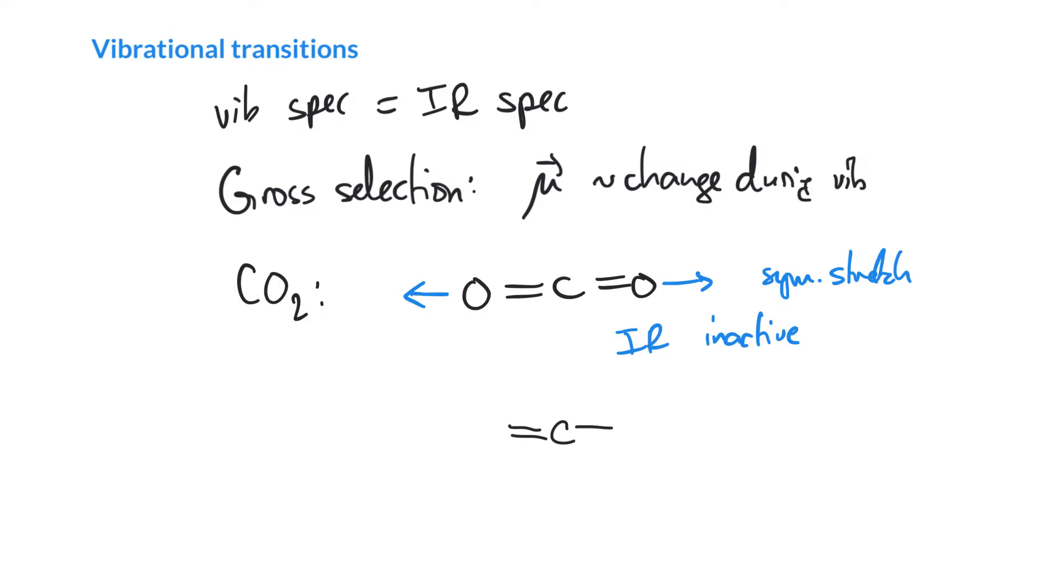But if we look at one of the other vibrations, in fact we have 3n minus 5 vibrations for a linear molecule, so we've got 3 times by the 3 atoms, that's 9 minus 5, we should have 4 vibrations here.